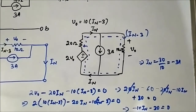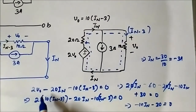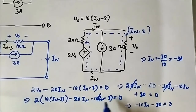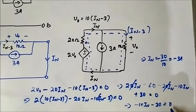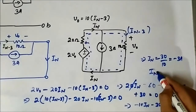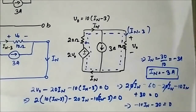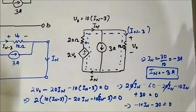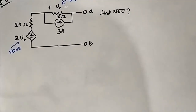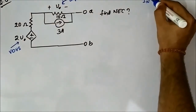This is the whole KVL equation. After simplification, minus 10*In minus 30 equals 0, so In equals minus 3 ampere. We have now determined In. Next, we have to determine Rn.